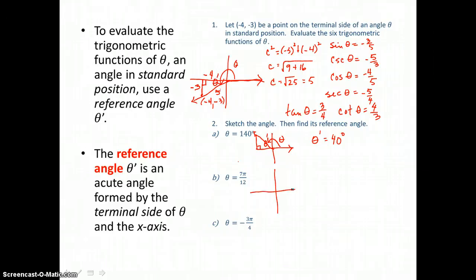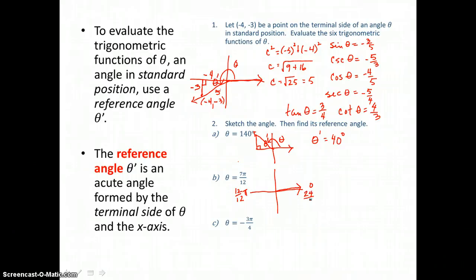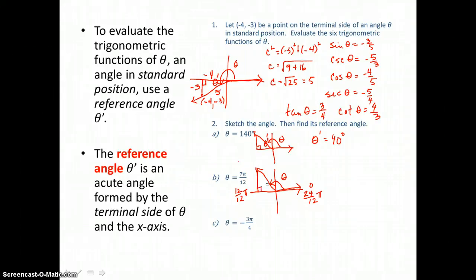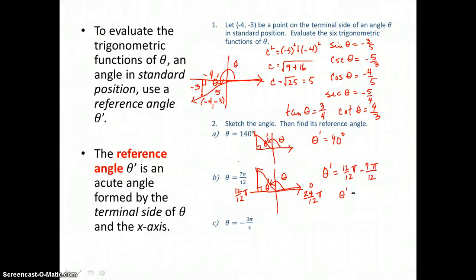Let's find the reference angle theta prime for 7π/12. We start our rotation on the positive x-axis and move in the positive direction. Halfway is 1 pi, which equals 12 twelfths pi, and a full circle would be 2 pi, or 24 twelfths pi. So we rotate only 7 twelfths pi to reach our terminal side. We form a right triangle with the x-axis, and the acute angle between the terminal side and the x-axis is our theta prime. So theta prime equals 12 twelfths pi take away 7 twelfths pi, giving theta prime equals 5 twelfths pi.